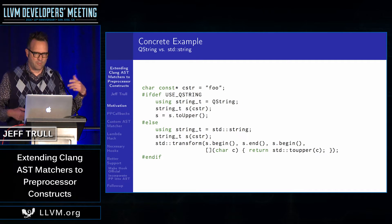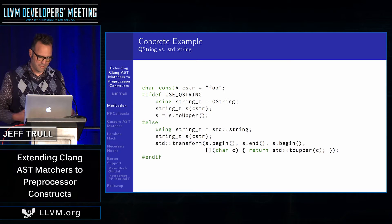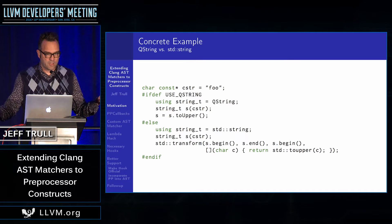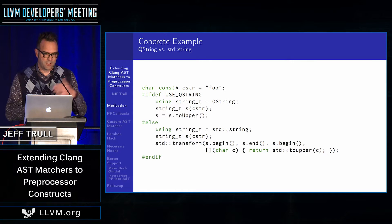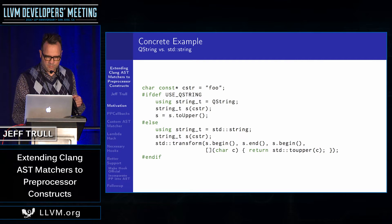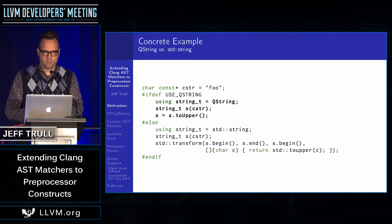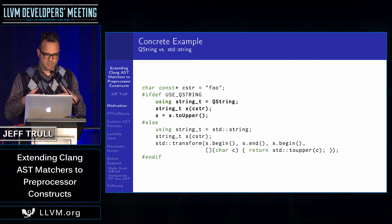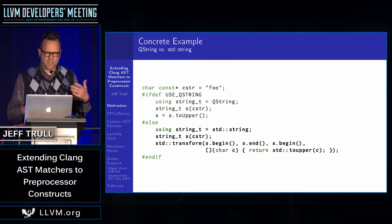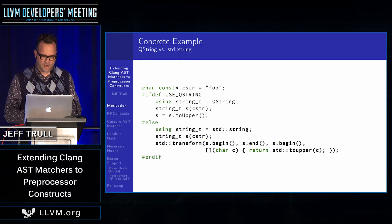There's a concrete example I used to motivate this. If you have two different kinds of strings you want to use in code and you want to support either one of them, you want there to be a little directive or macro defined to tell you which one to use. For example, you might be working with people who like Qt and want to use QString. If you want to convert QStrings to uppercase, there's a member function, but if you want to use std::string instead, you might have to use an algorithm or something like that.